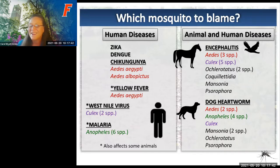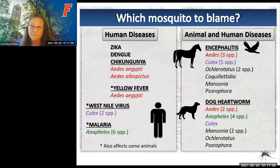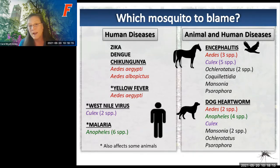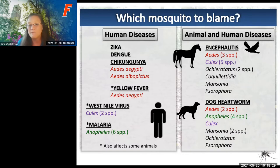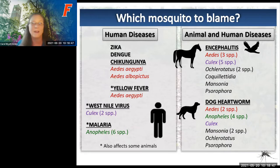Encephalitises are zoonotic diseases—infectious diseases caused by a pathogen that jumps from a non-human animal to a human. Eastern equine encephalitis uses a bird-mosquito transmission cycle. The virus builds up quickly in birds, and when another mosquito bites that bird, it gets loaded with the pathogen. When that mosquito bites a human or horse, we get sick. But because of our large body size, we can't build up enough virus to transmit it through successive mosquito bites—so we are called dead-end hosts.